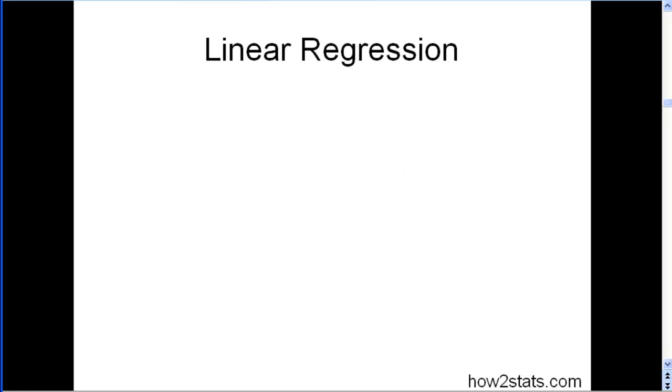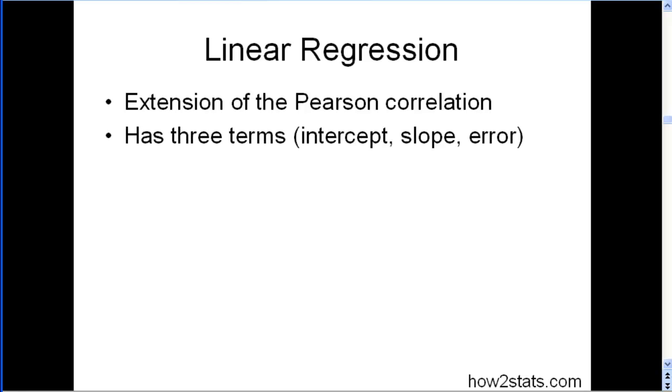So linear regression, what is it? It's an extension of the Pearson correlation. And I'm going to assume that you already know what a Pearson correlation is in this presentation. It has three terms: an intercept, a slope, and an error term. It helps us make predictions, that is, build models. And that's why linear regression is so useful.